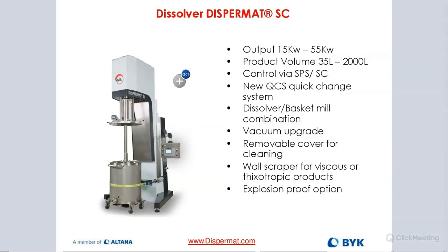By removing the air, you have a more homogenous dispersing process and a quicker product transfer. When milling, air bubbles inside the slurry act almost like tiny little air mattresses — they cushion the blows of the beads, slowing down the milling process. By removing the air, you disperse and mill a lot more efficiently.